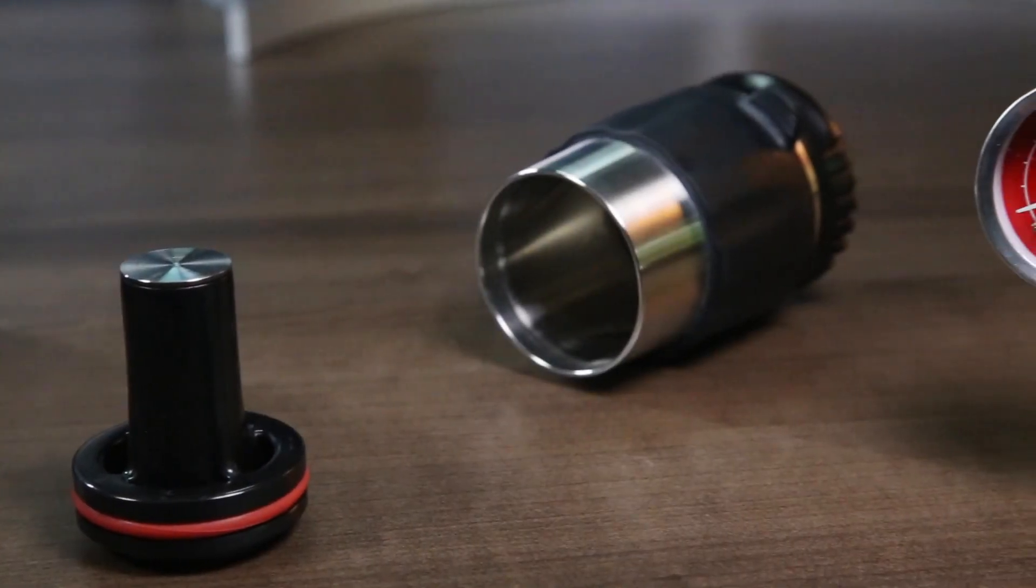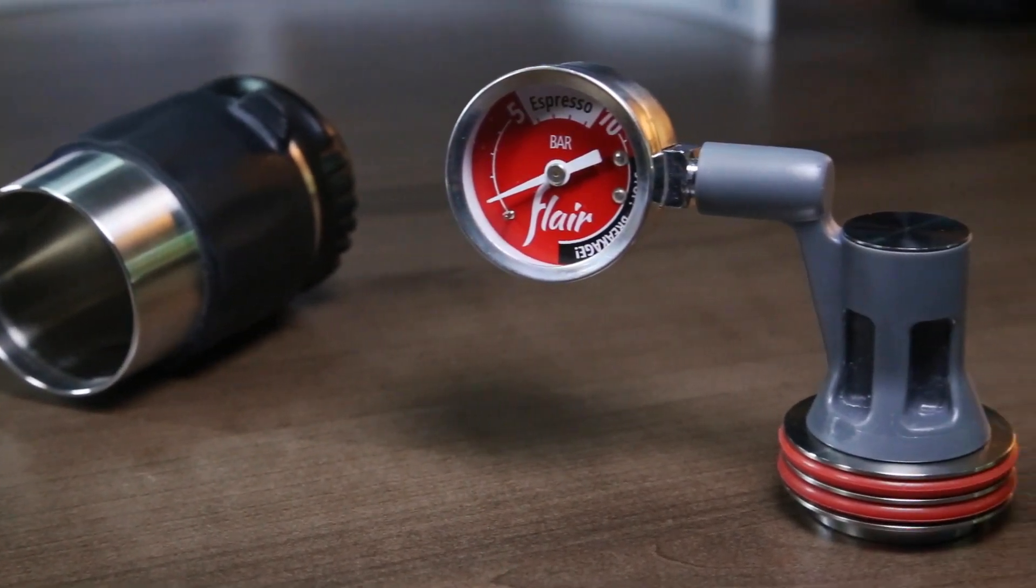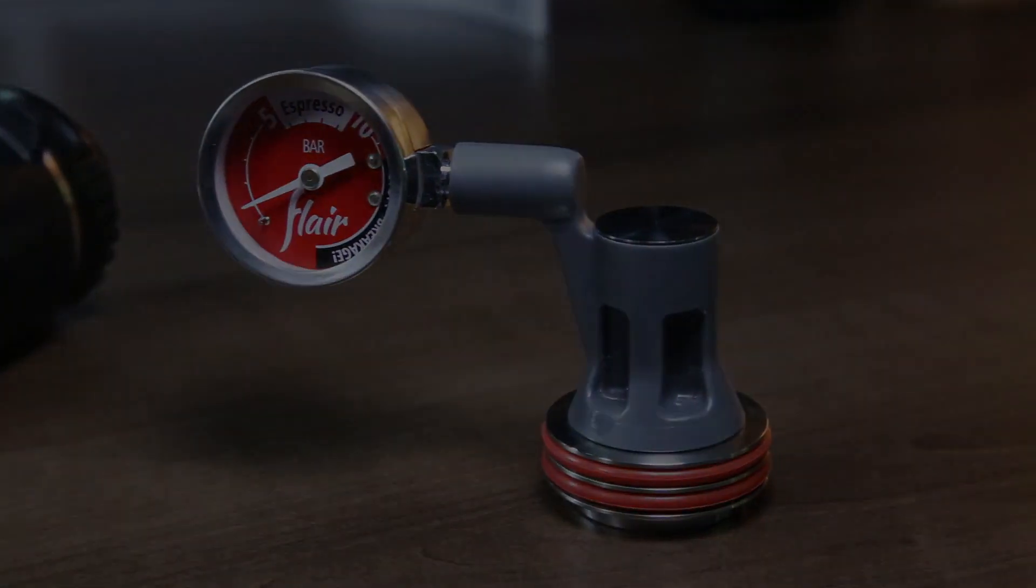It should take some effort but not an unreasonable amount to generate espresso-worthy pressure using the Flair, so be careful not to apply too much force. If you find that it's taking a lot of effort, you may have something else wrong like grind size that you may have to revisit in order to make it work. I highly recommend spending the extra money to get the pressure gauge kit though, to help with troubleshooting and to ensure you don't break the machine by forcing it.